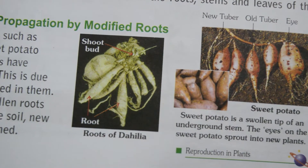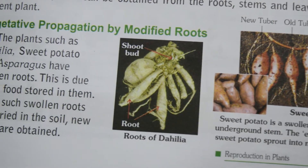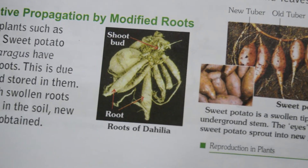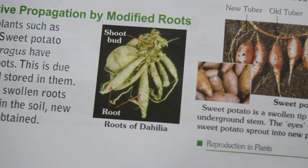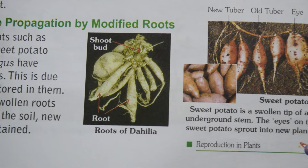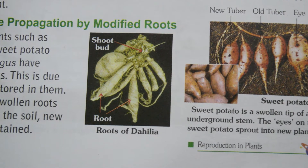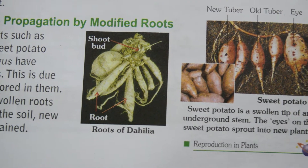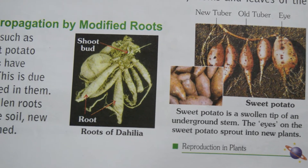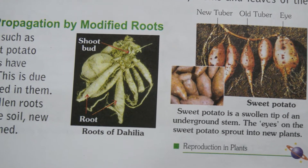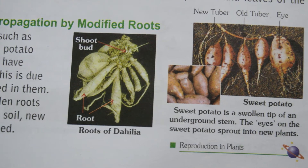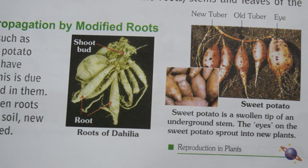Now we will see vegetative propagation by modified roots. Modified roots are actually swollen roots because food is stored in them. For example, sweet potato and dahlia are examples of modified roots. When such swollen or modified roots are buried in the soil, new plants are obtained.